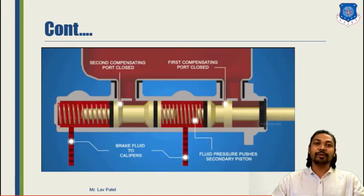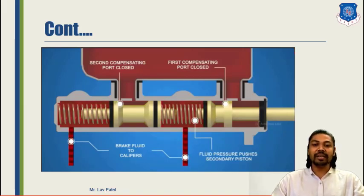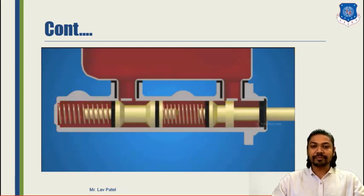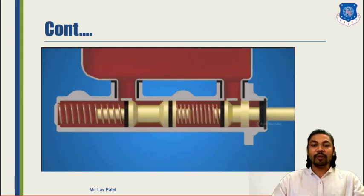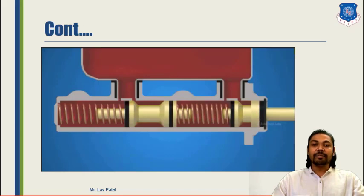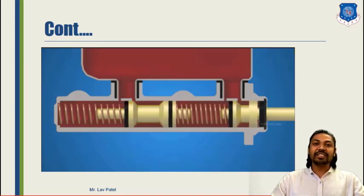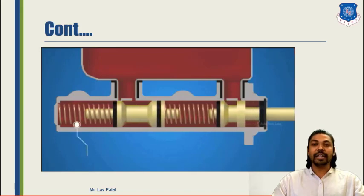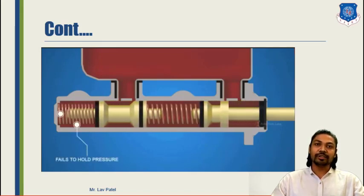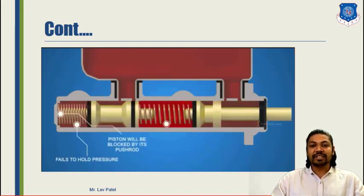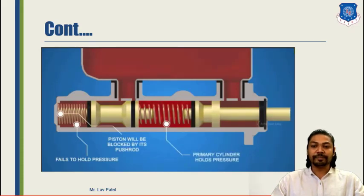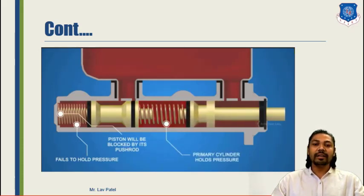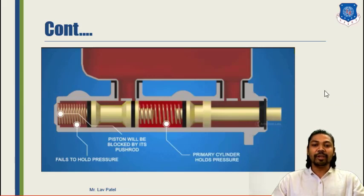The same calipers we use in four-wheelers or two-wheelers — the same principle applies. While releasing, to break the vacuum, the compensating port allows oil to come back to the compression chamber from the reserve oil. For that we are using this assembly of the master cylinder.